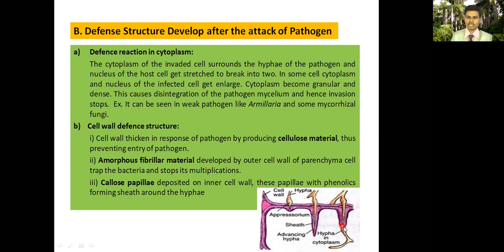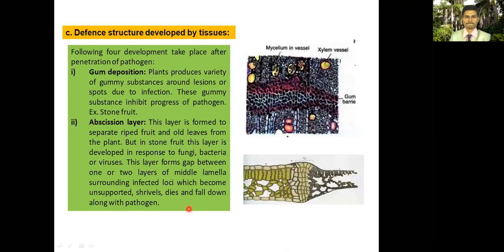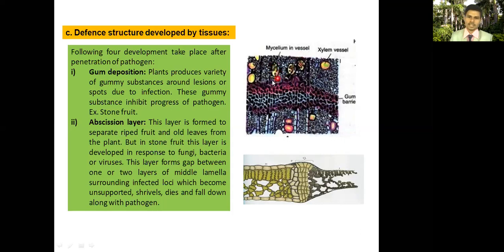Defense structure developed by tissues — gum deposition: plants produce a variety of gummy substances around infection spots. A gum barrier is developed that restricts the further spread of mycelium; the mycelium already present in the vessel is stopped at this region by the gum barrier.